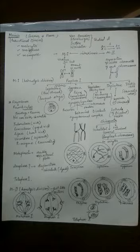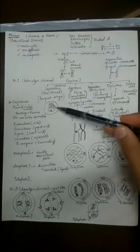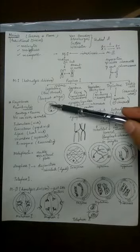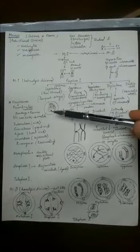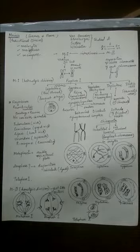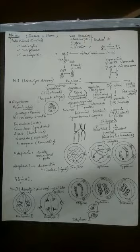Leptotene is the first sub-stage of prophase I. During this stage, the nuclear membrane remains intact, the pair of centrosomes starts moving slightly away from each other, the nucleolus is still present, and all the genetic material appears as thin threads arranged in a bouquet formation — hence called the thin thread and bouquet stage.